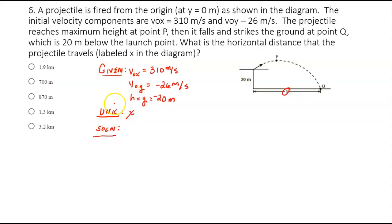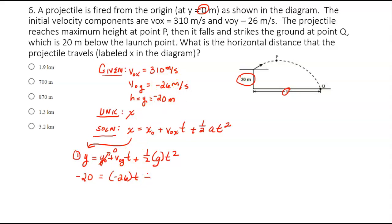So we have this formula. X equals X0, this is one of our kinematic formulas, plus V0X times time plus one half AT squared. We're going to translate this to Y. Y equals Y0 plus V0Y plus one half GT squared. Our Y0 is actually zero. So our Y, the distance here, is negative 20, which equals negative 26 times T plus one half gravity is also going to be negative T squared.